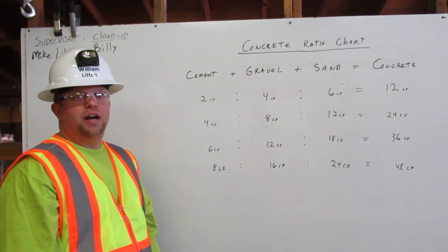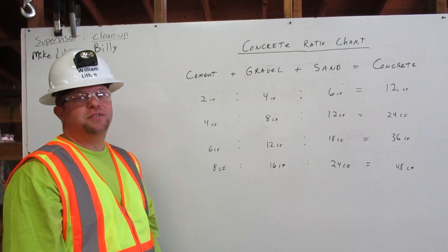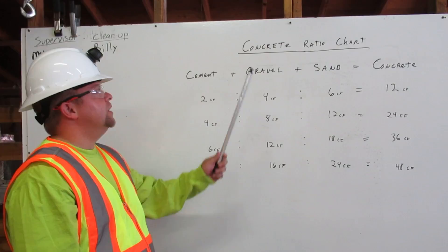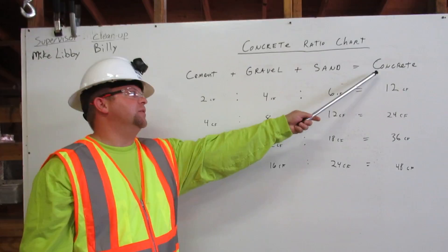I am William Litton, and I am construction math certified. I am going to explain how to create a ratio chart using a concrete mixture example. Let me show you. This is our concrete ratio chart: Cement plus gravel plus sand equals concrete.